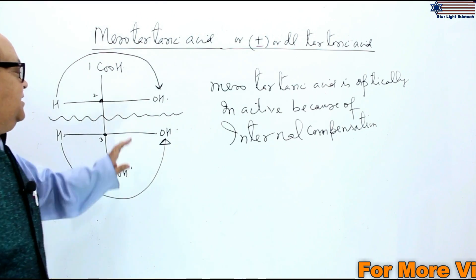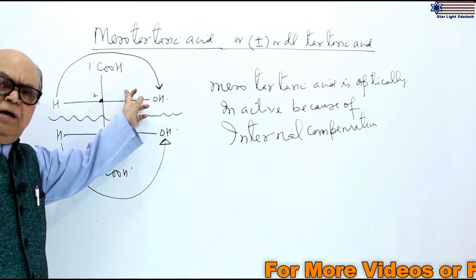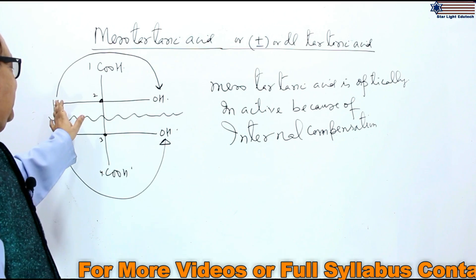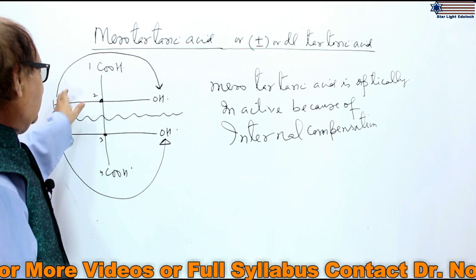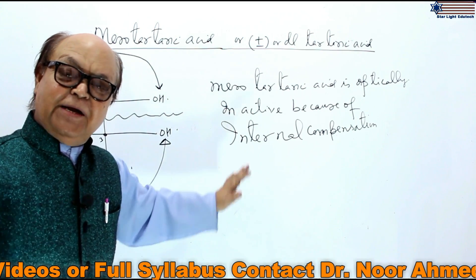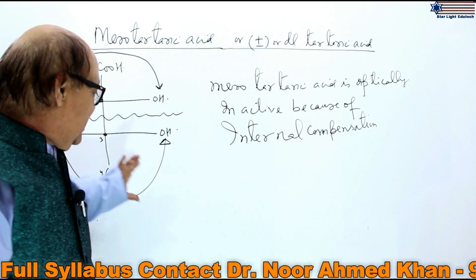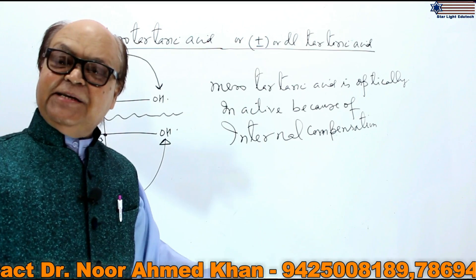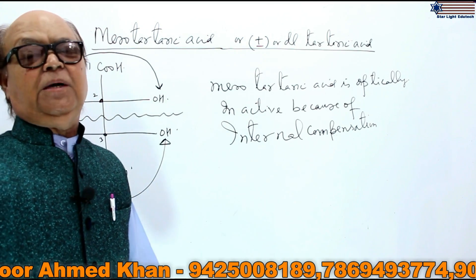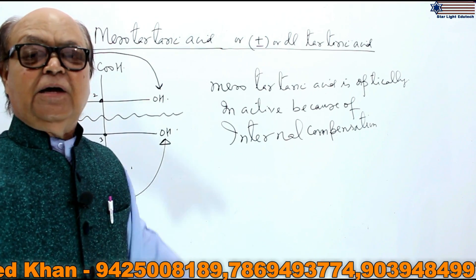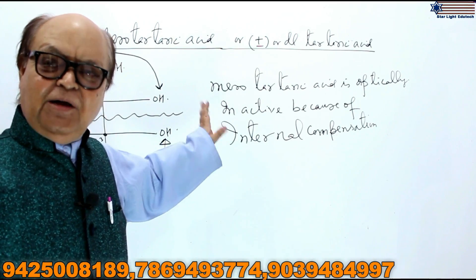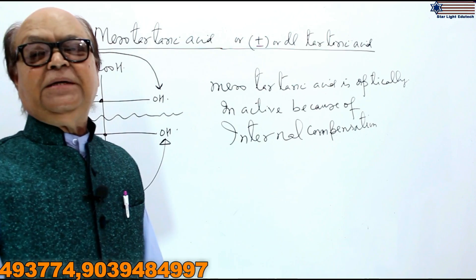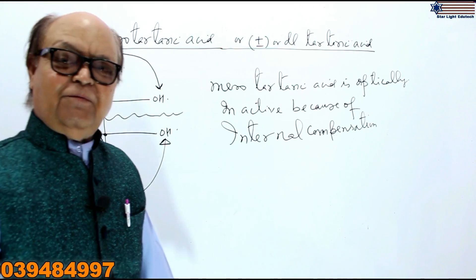Meso or DL tartaric acid — the Fischer projection formula shows carbons 1, 2, 3 and 4. The upper half of the molecule rotates the plane of polarized light to one direction, and the lower half rotates it in the opposite direction, so the plane of polarized light does not rotate. This is why meso-tartaric acid is optically inactive due to internal compensation within the molecule.